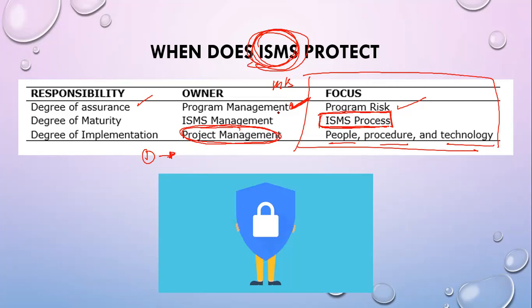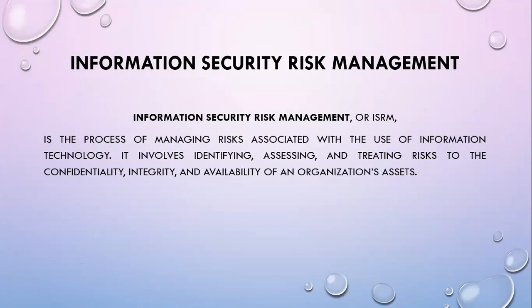Now we go to Information Security Risk Management or ISRM. What is ISRM? It is a process of managing risk associated with the use of information technology and information systems in a certain organization or company. It involves identifying, assessing, and treating risk to the confidentiality, integrity, and availability of an organization's assets. As you can notice, the definition still boils down to the CIA principles — confidentiality, integrity, and availability.